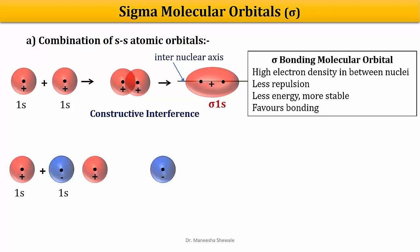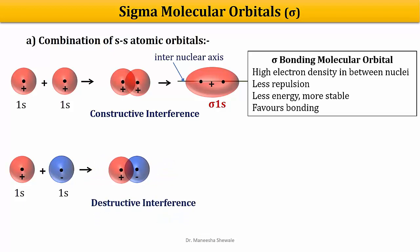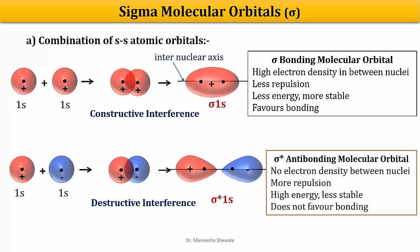When two S atomic orbitals combine such that one is plus and the other is minus, this is a destructive interference, resulting in the formation of a molecular orbital denoted as sigma star S — the sigma antibonding molecular orbital. Between the two nuclei there is no electron density, and this point is called a node, with the plane passing through it called a nodal plane. The electron density is concentrated away from the nuclei, causing more repulsion between them. Hence the energy of the antibonding molecular orbital is higher, and these orbitals are less stable and do not favor bonding.